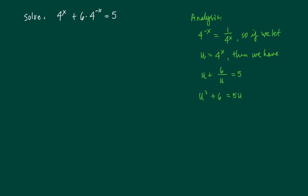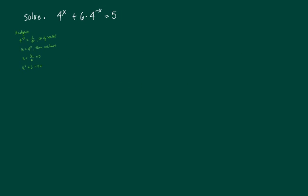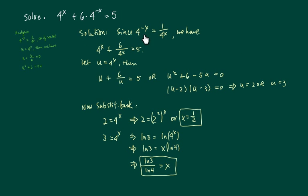Alright, so let's write up the solution. 4 to the minus x is 1 over 4 to the x with a positive exponent. This resembles what we have over here.